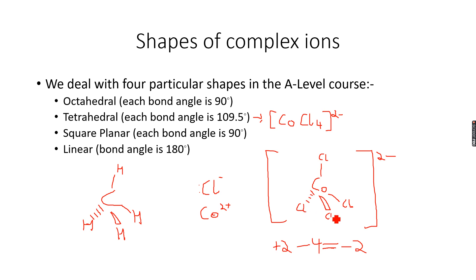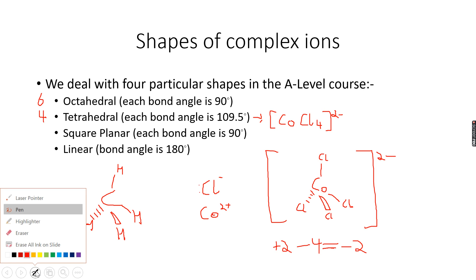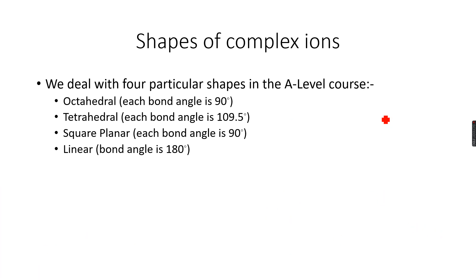A tetrahedral complex will always have four coordinate bonds, and an octahedral complex will have six coordinate bonds. Just remember: six coordinate bonds in octahedral, four coordinate bonds in tetrahedral. Now let's move on to square planar — each bond angle in square planar is 90 degrees.